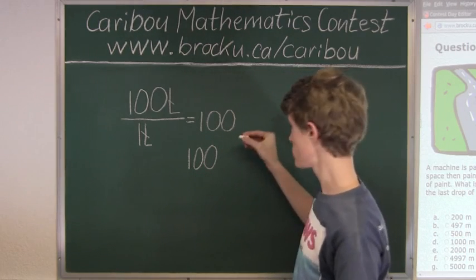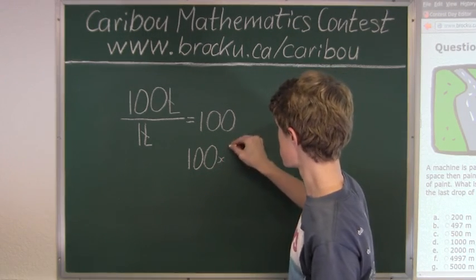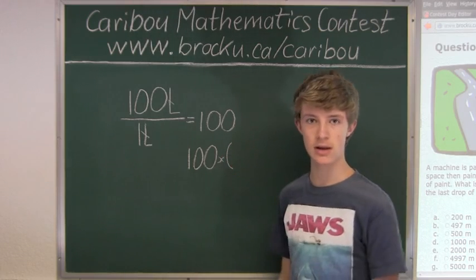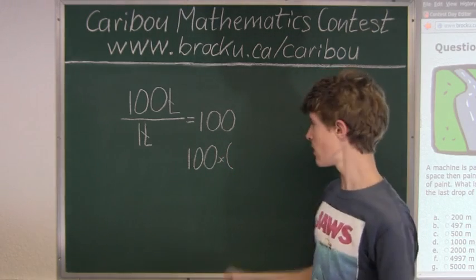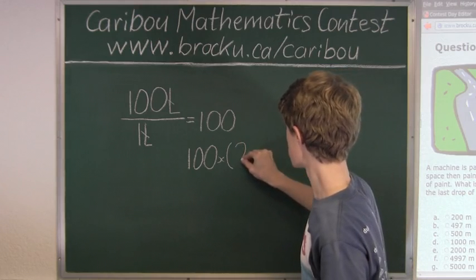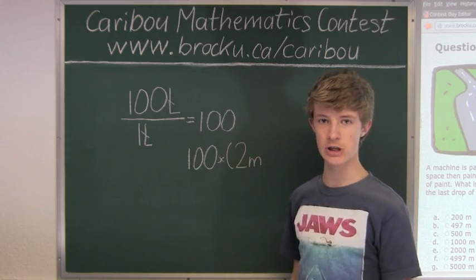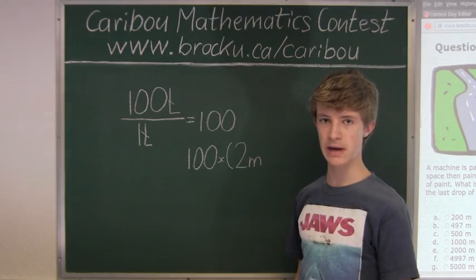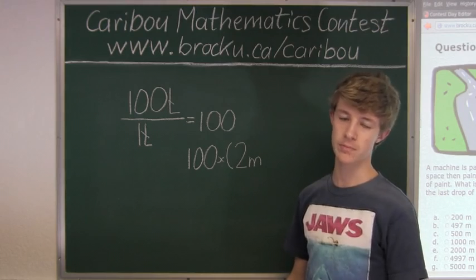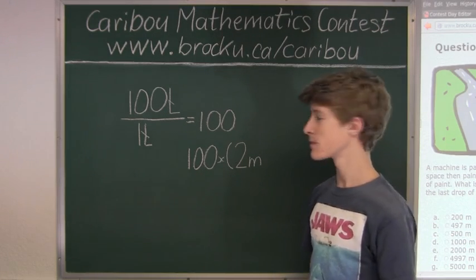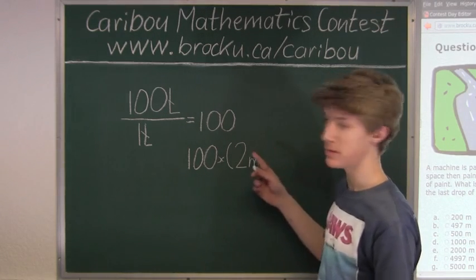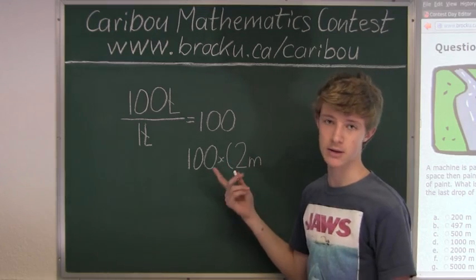We have 100 times, and we know that each line is 2 meters long. But we also know that the machine leaves a 3 meter space before the next line. So we will have to add 3 meters to that to find the total length.